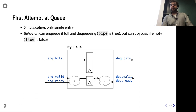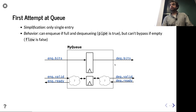We're going to have the pipe-is-true behavior — meaning I can enqueue even if I'm dequeuing and I'm full. But we're not going to do the bypassing. Let's go ahead and code this up.